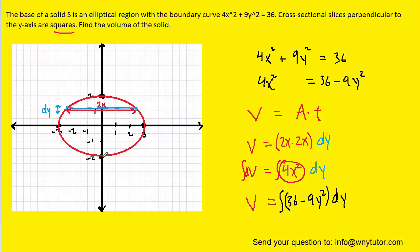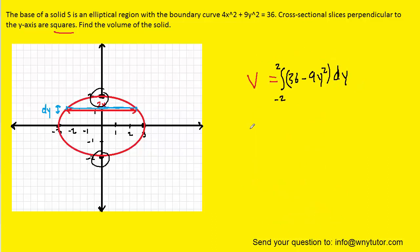We also need bounds when doing this integration, but we can see from the picture that the ellipse is bounded in the y-direction from negative 2 to positive 2. So we could put those bounds into our expression. So now we have the volume of all of the cross-sectional slices, and if we evaluate this integral, we'll have our answer.